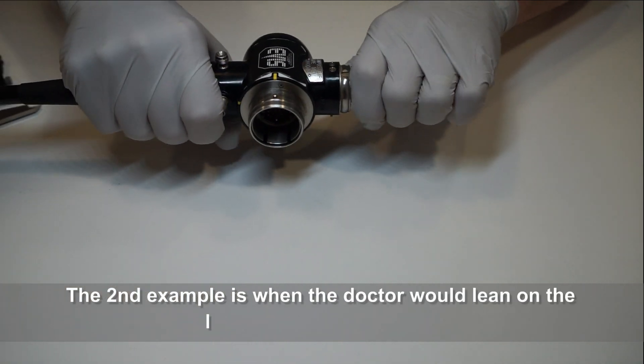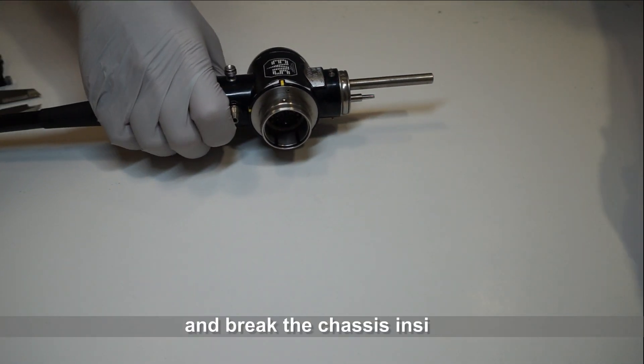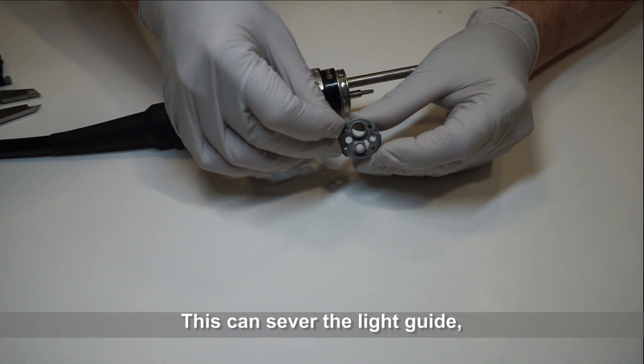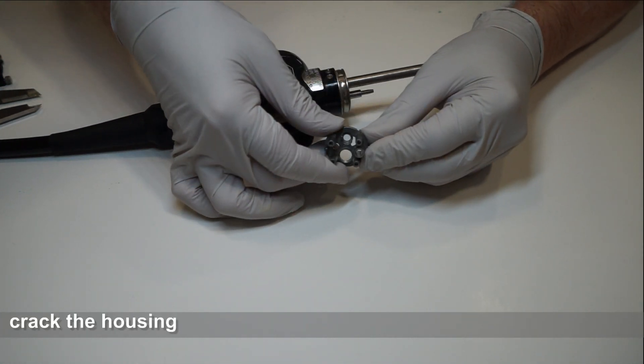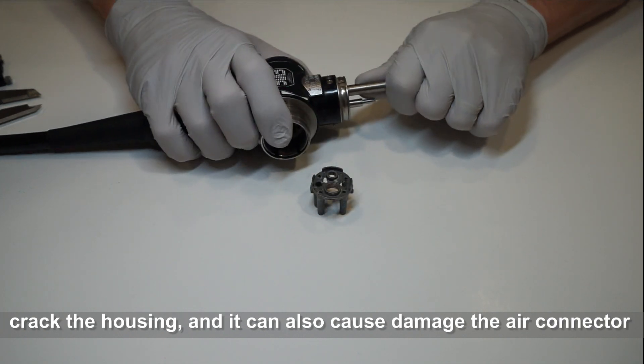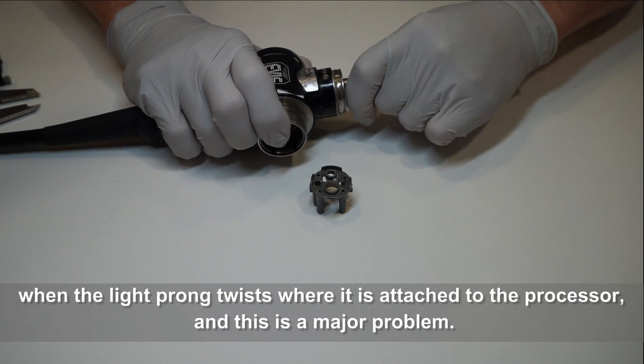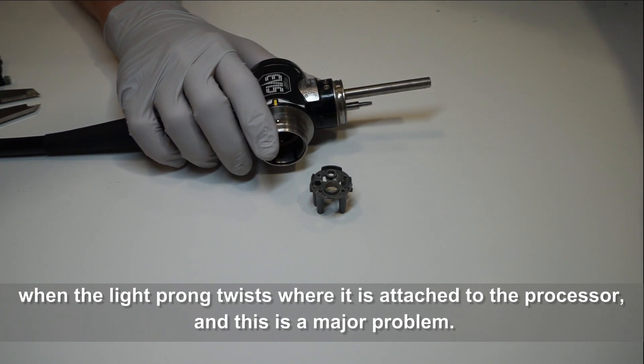The second example is when the doctor would lean on the light guide connector assembly and break the chassis inside. This can sever the light guide, crack the housing. It can also cause damage to the air connector when the light prong twists where it's attached to the processor. And this is a major problem.